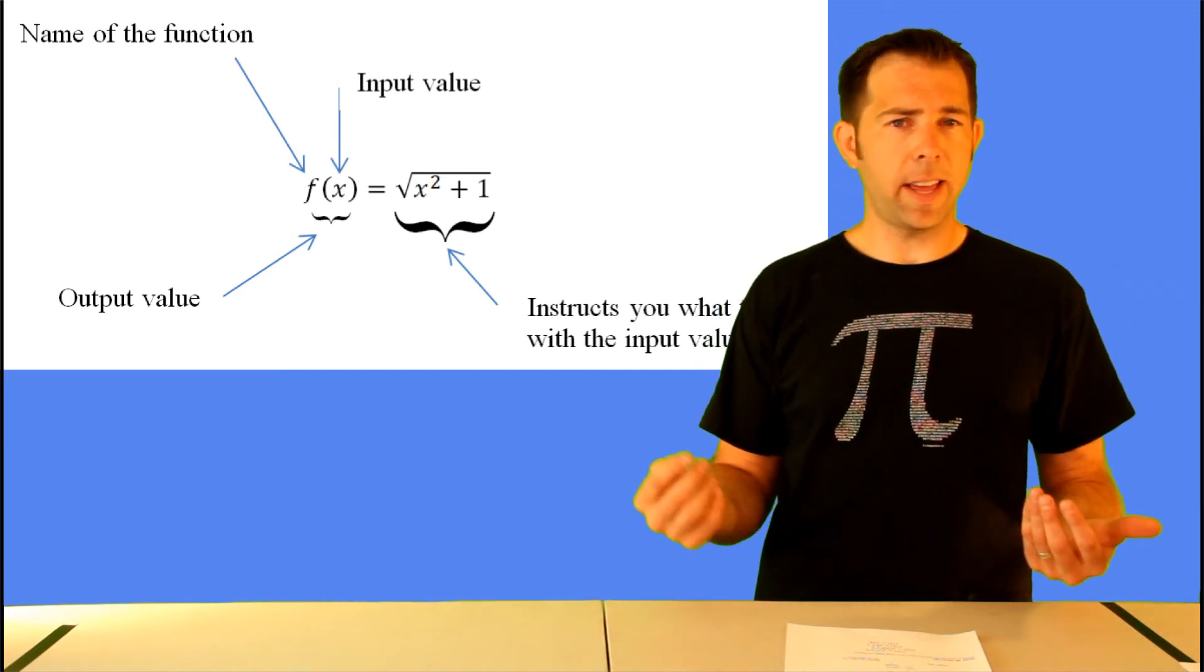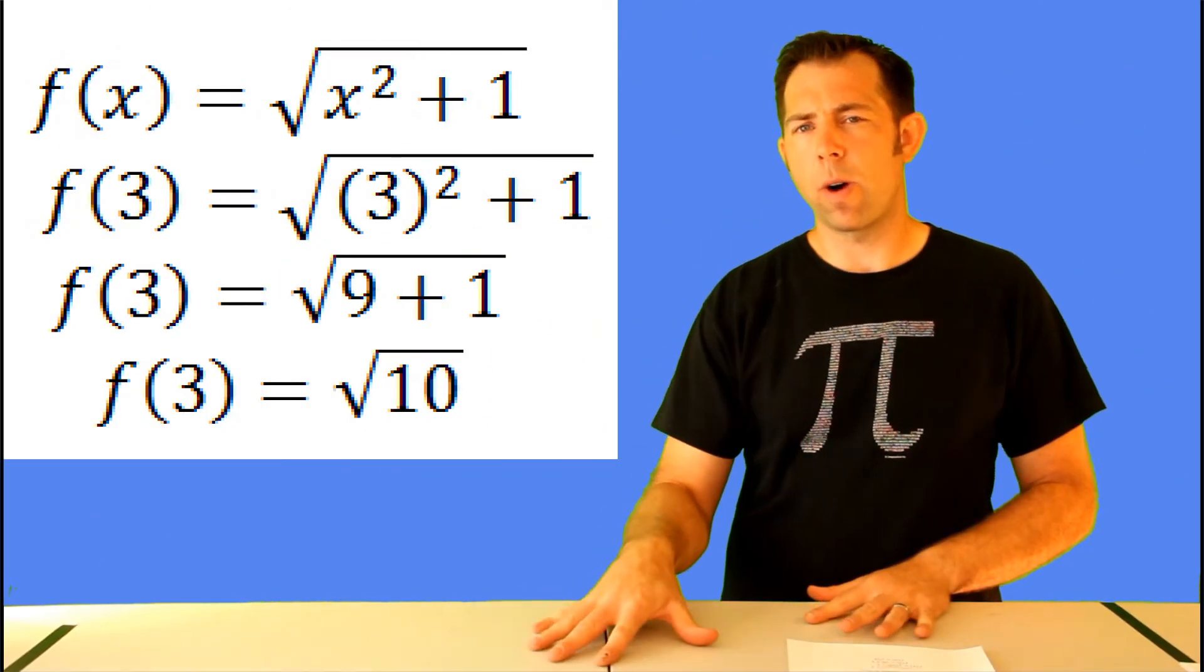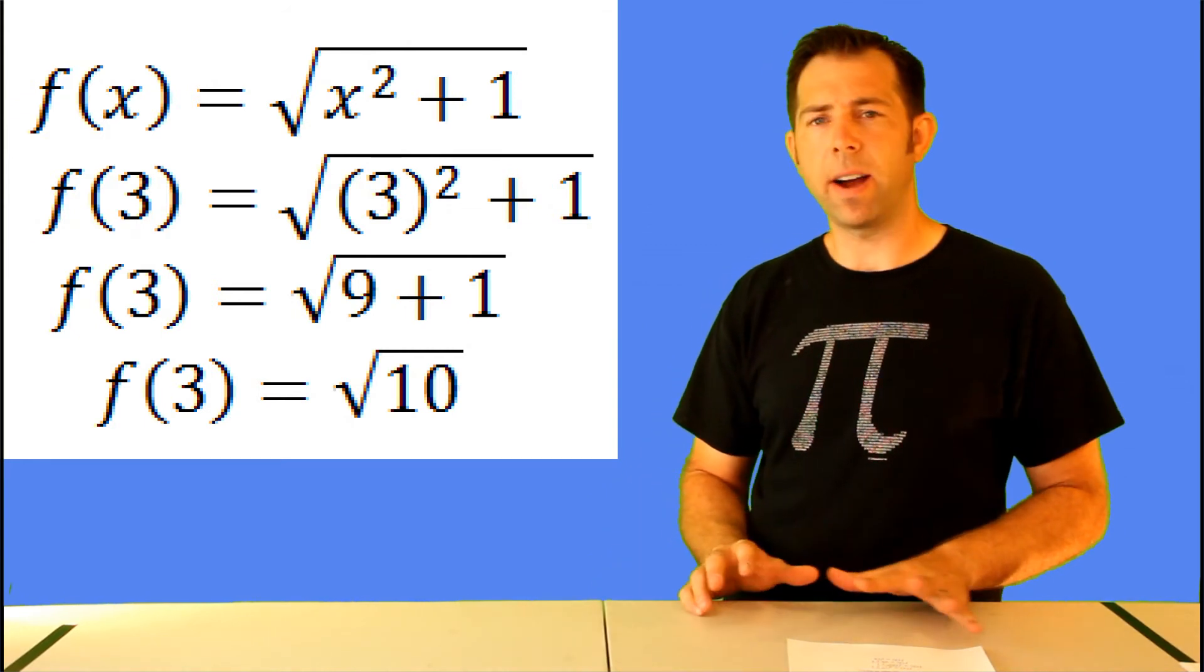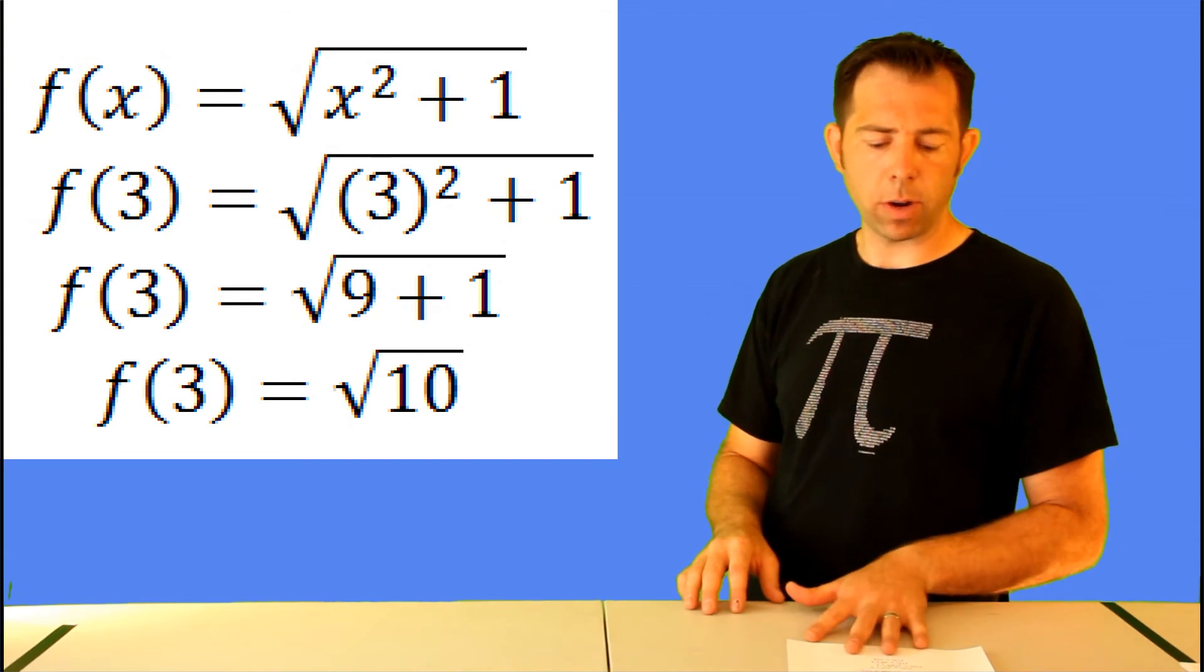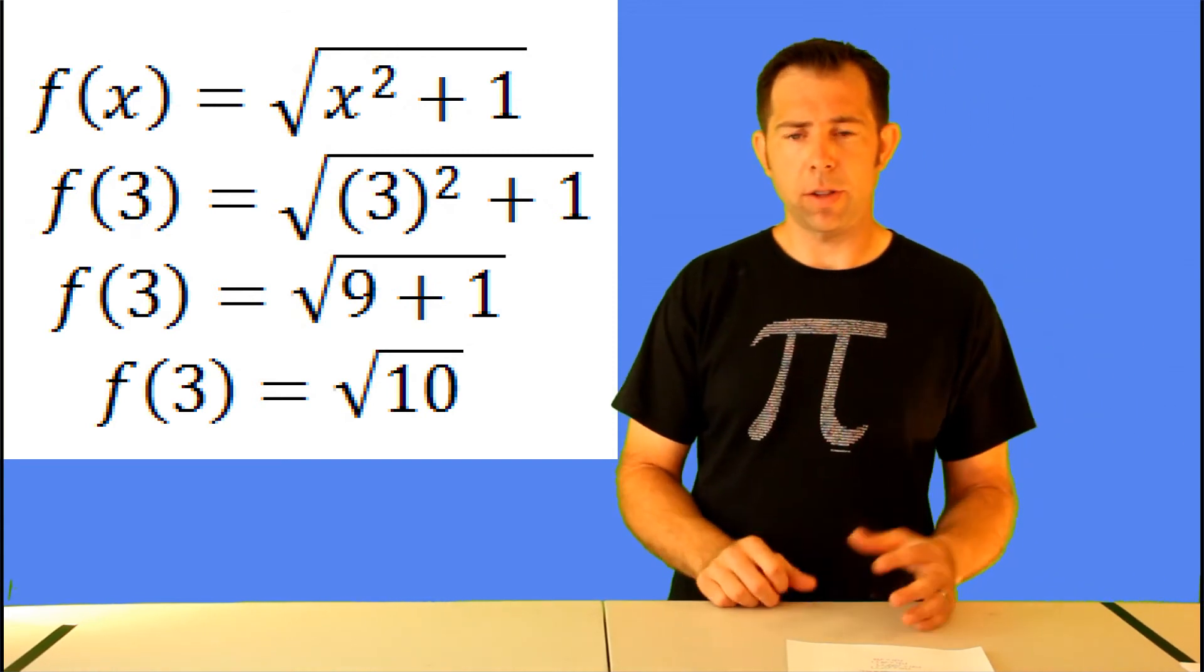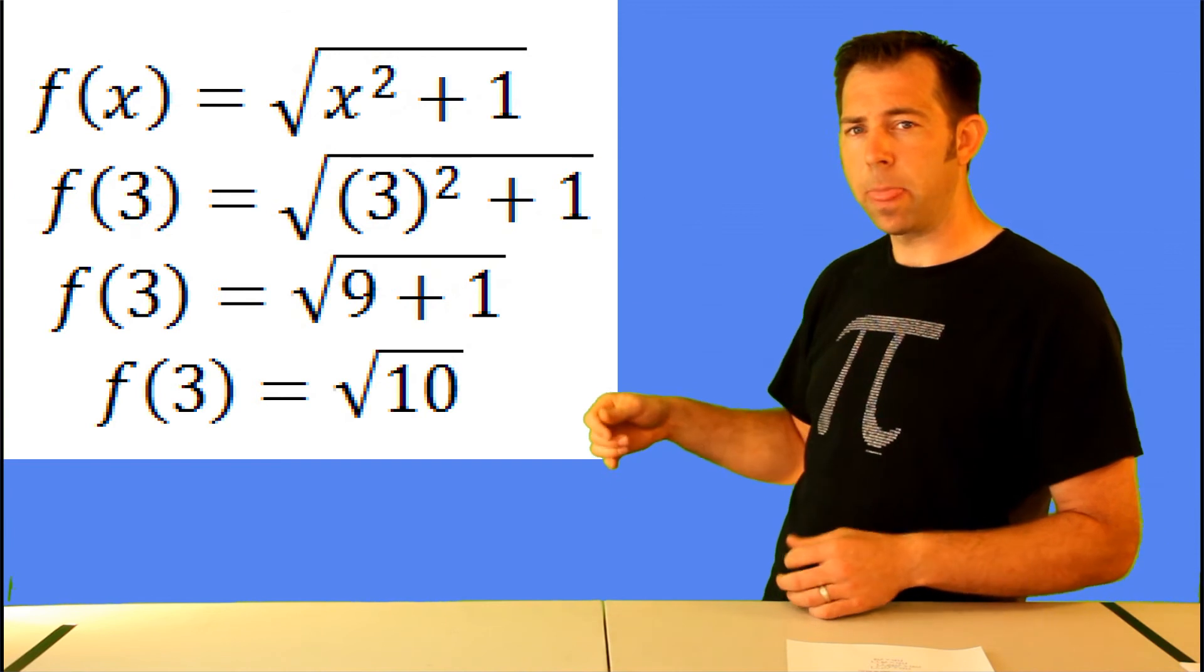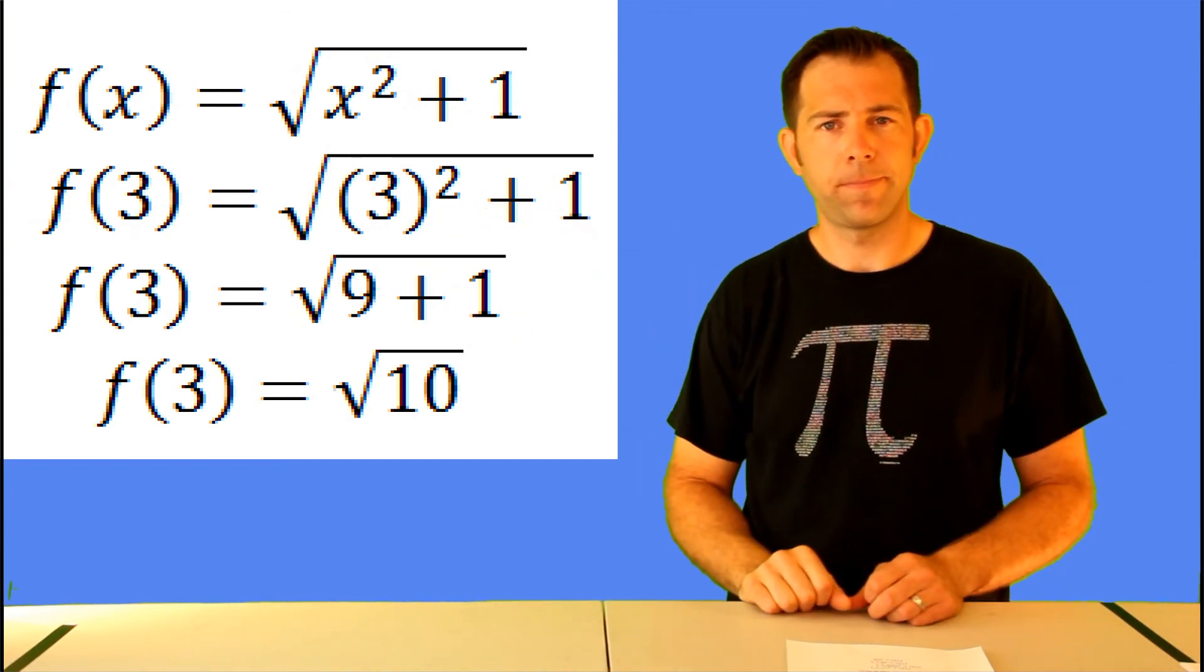It says take the input value, square it, and then add one. So in this example, instead of saying find the y-value when x is three, it's just easier to use function notation. Find f of three. So in this case, f of x is equal to the square root of x squared plus one. f of three just means you input three for the x. So we have the square root of three squared plus one, or the square root of nine plus one, which gives you that f of three is ten. In other words, y is ten when x is three.